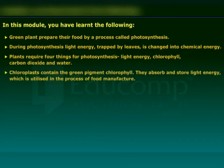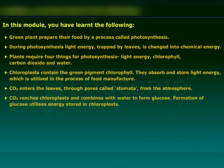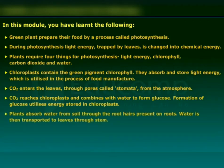Chloroplasts contain the green pigment chlorophyll. They absorb and store light energy, which is utilized in the process of food manufacture. Carbon dioxide enters the leaves through pores called stomata from the atmosphere. Carbon dioxide reaches chloroplasts and combines with water to form glucose. Formation of glucose utilizes energy stored in chloroplasts. Plants absorb water from soil through the root hairs present on roots.